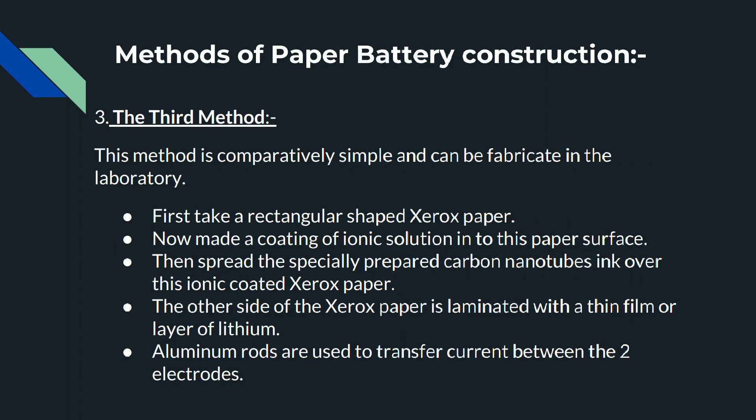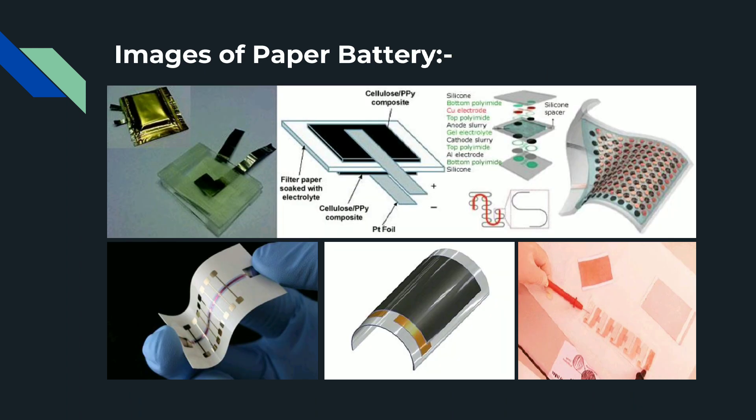The third method is comparatively simple and can be fabricated in the laboratory. First, take a rectangular sheet of xerox paper and coat it with ionic solution on the surface. Then spread specially prepared carbon nanotube ink over this ionic-coated paper. The other side of the paper is laminated with a thin film or layer of lithium, and aluminium rods are used to transfer current between the two electrodes.